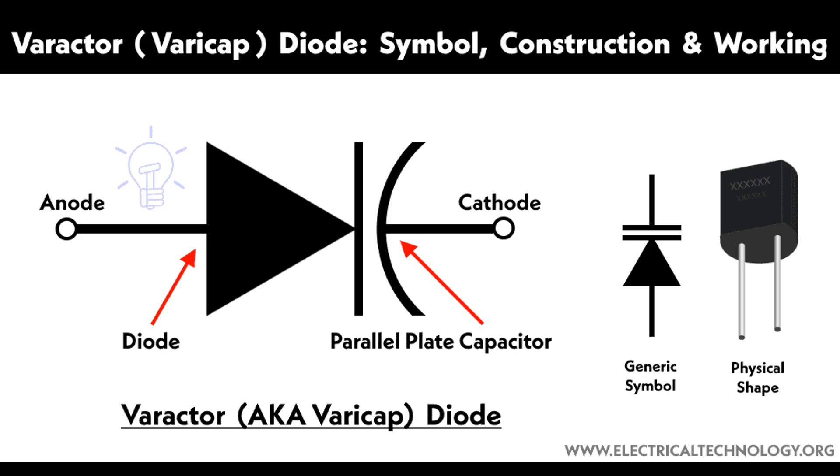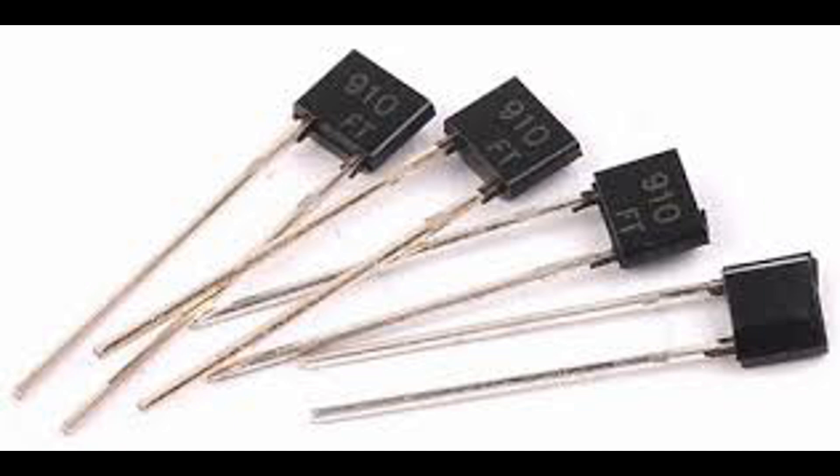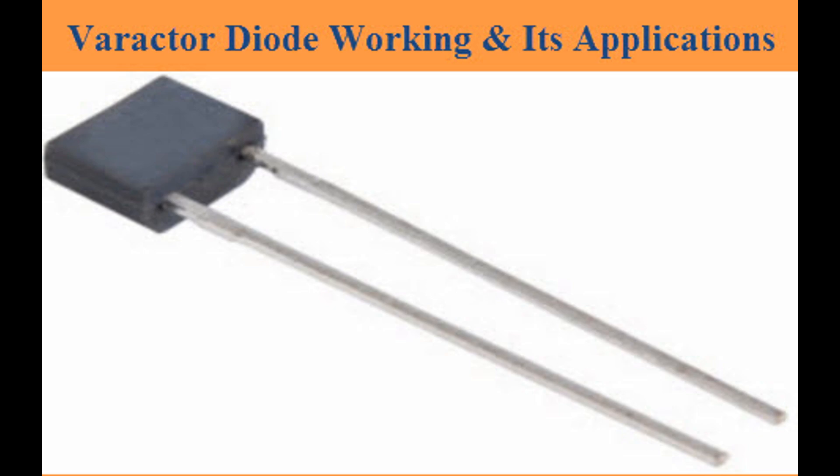The primary function of a varactor diode is to act as a variable capacitor. When a reverse-bias voltage is applied to the diode, the width of the depletion region changes, which in turn changes the capacitance of the diode.